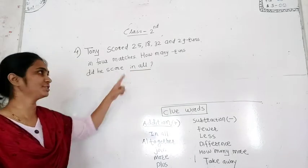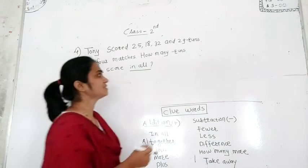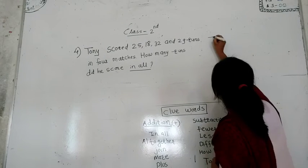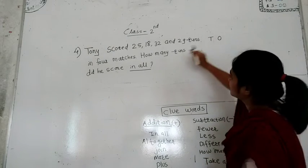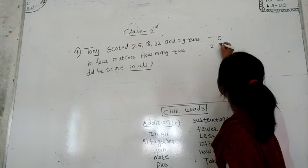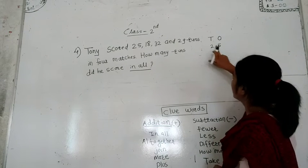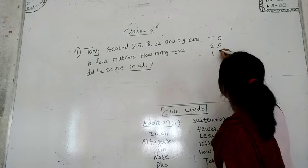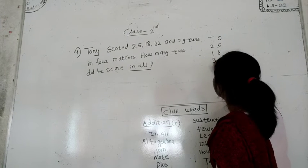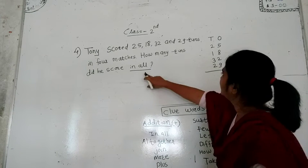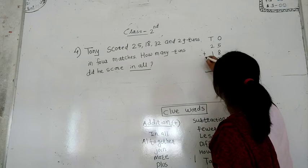We have to do addition. First I arrange the numbers according to their places. I write here tens and ones. First I write 25 — 2 is in the tens column and 5 is in the ones column. Then I write 18, then 32, then 29. We have to do addition, so I put the sign of plus.